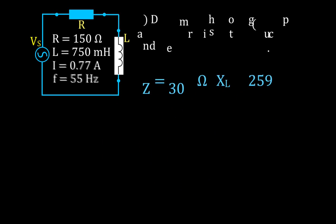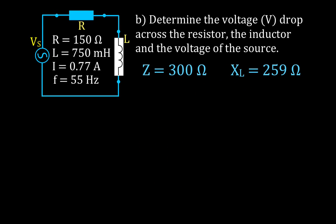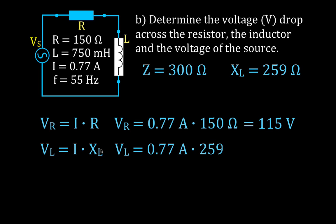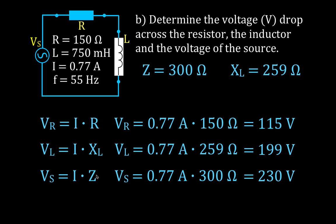The next thing we're going to do is calculate the voltages across the resistor, inductor, and source using Ohm's law. For the resistor: V equals I times R, giving 115 volts. For the inductor: V equals I times XL (inductive reactance), giving 199 volts. Remember, resistors have resistance and inductors have reactance. To calculate the source voltage — the total voltage — we use V equals I times Z (the impedance), and we get 230 volts.